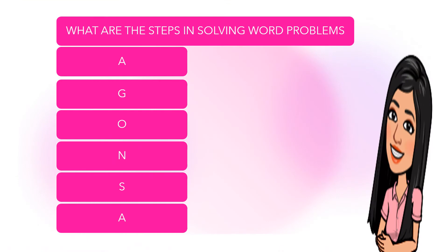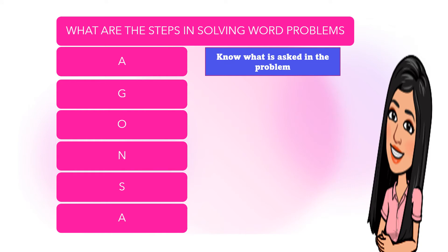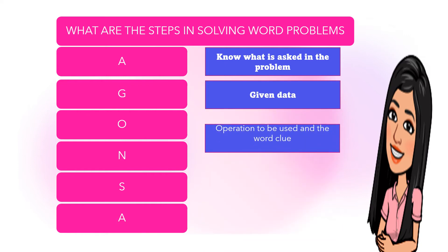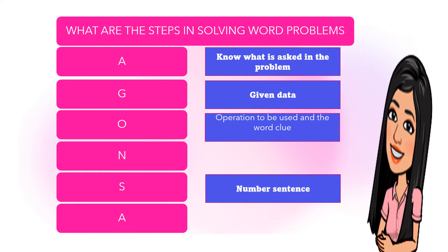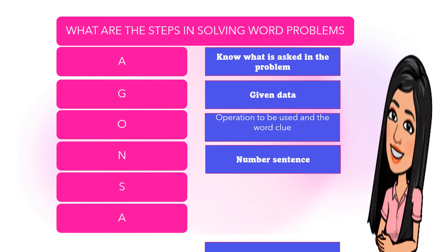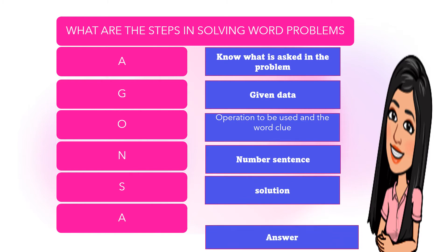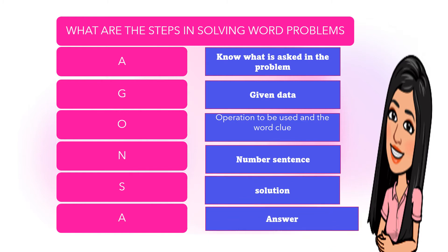What are the steps in solving word problems? What do you mean by AGONSA? A is for 'asked' — know what is asked in the problem. G means the given data in the problem. O is the operation to be used, and let us include the word clue. N is the number sentence. S is for the solution. And A is for the complete answer.